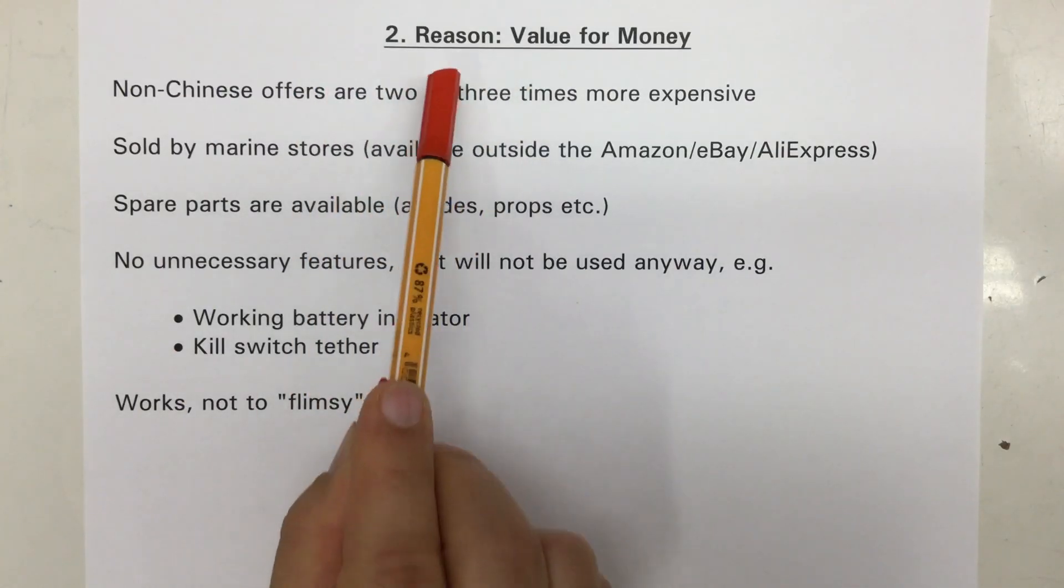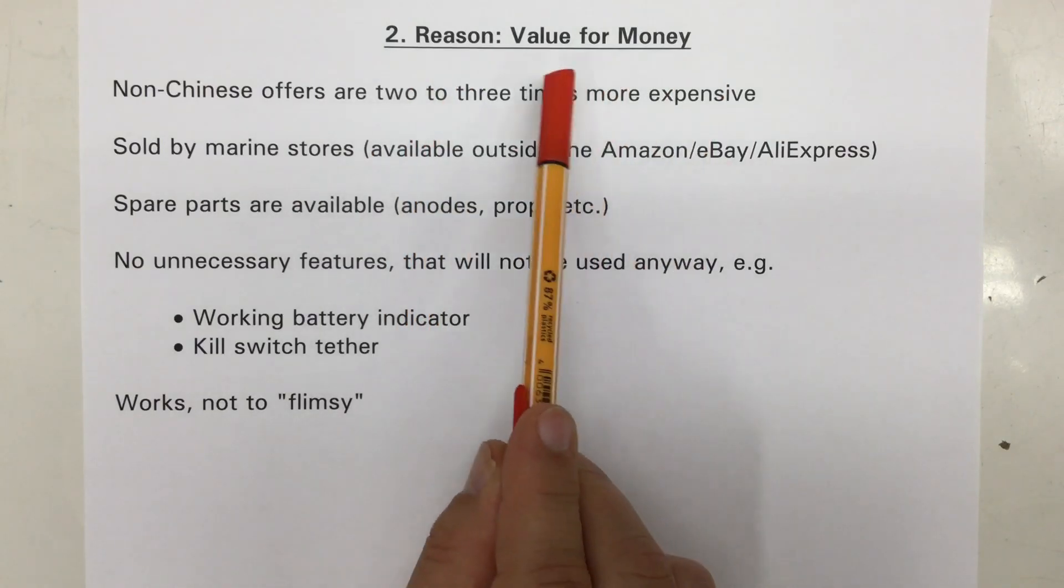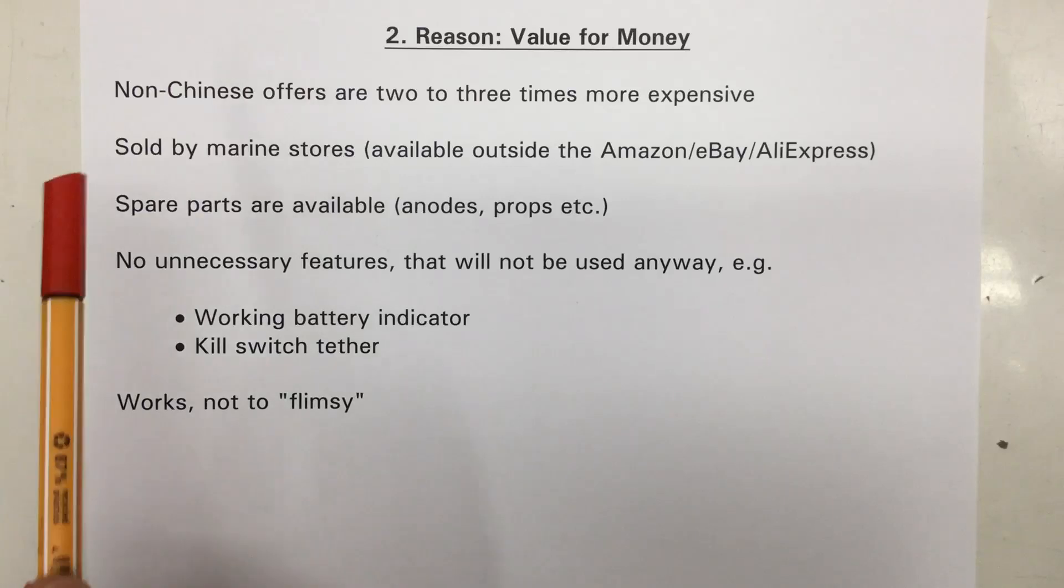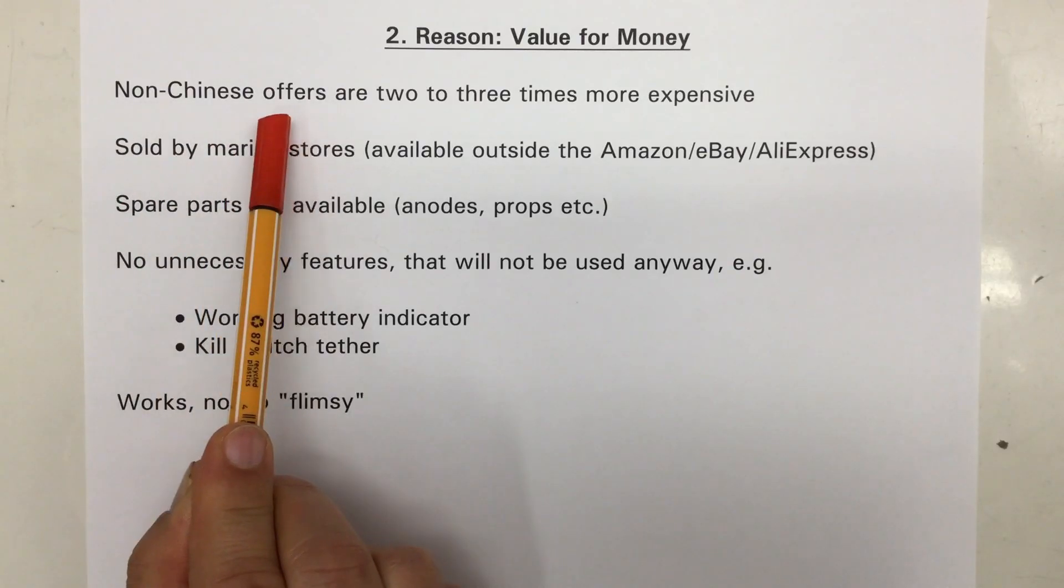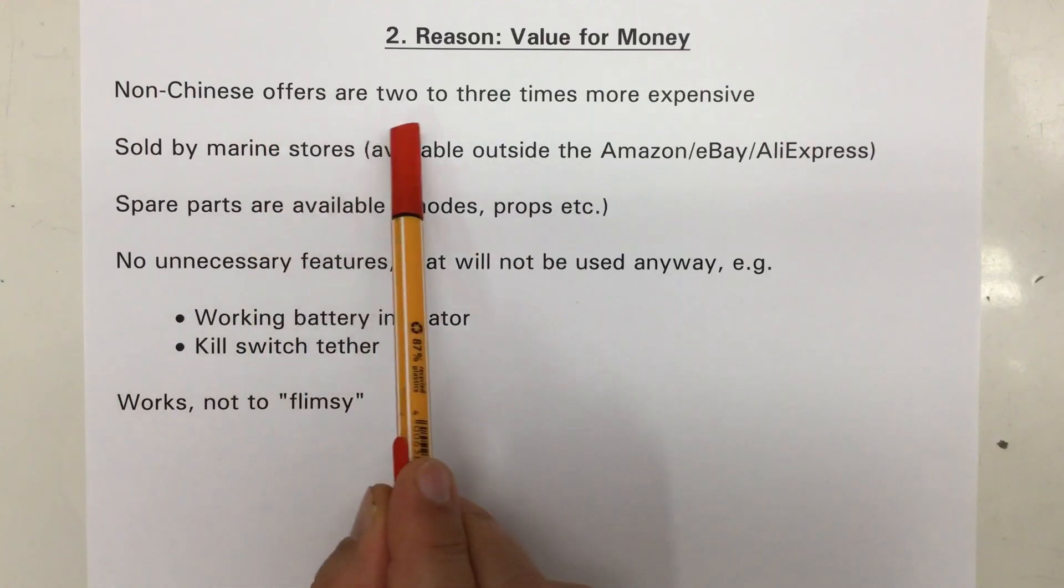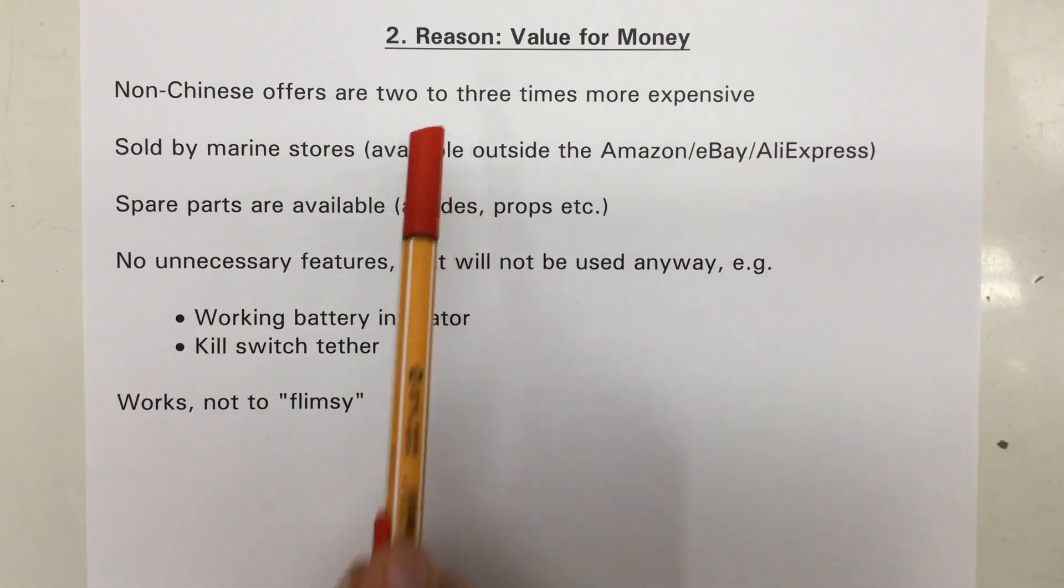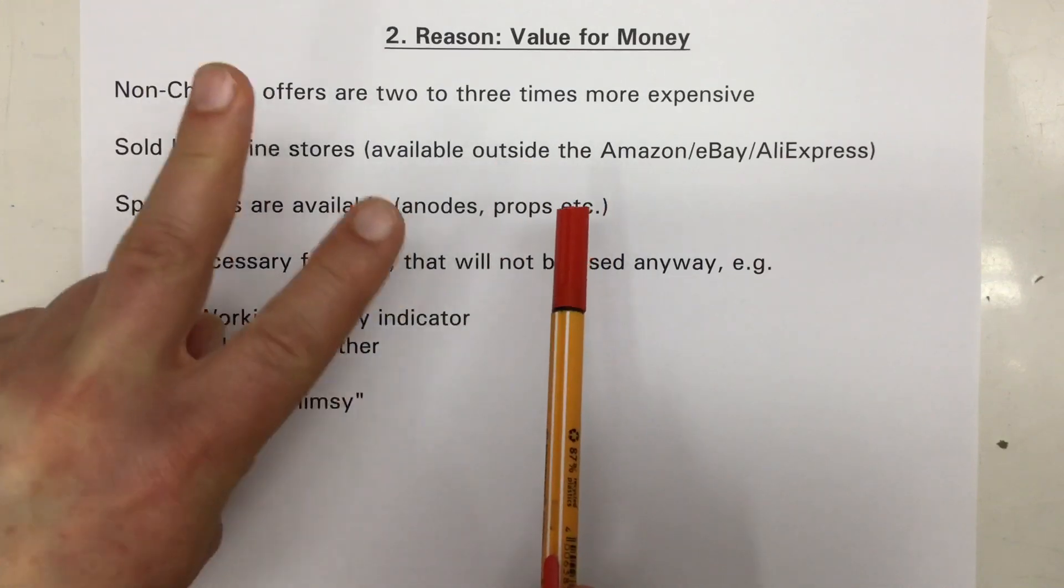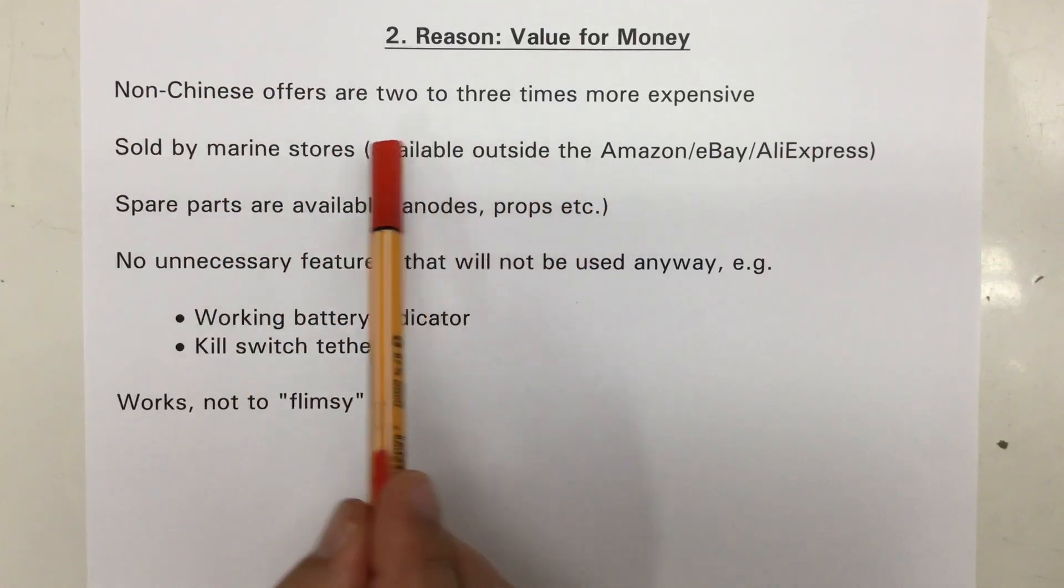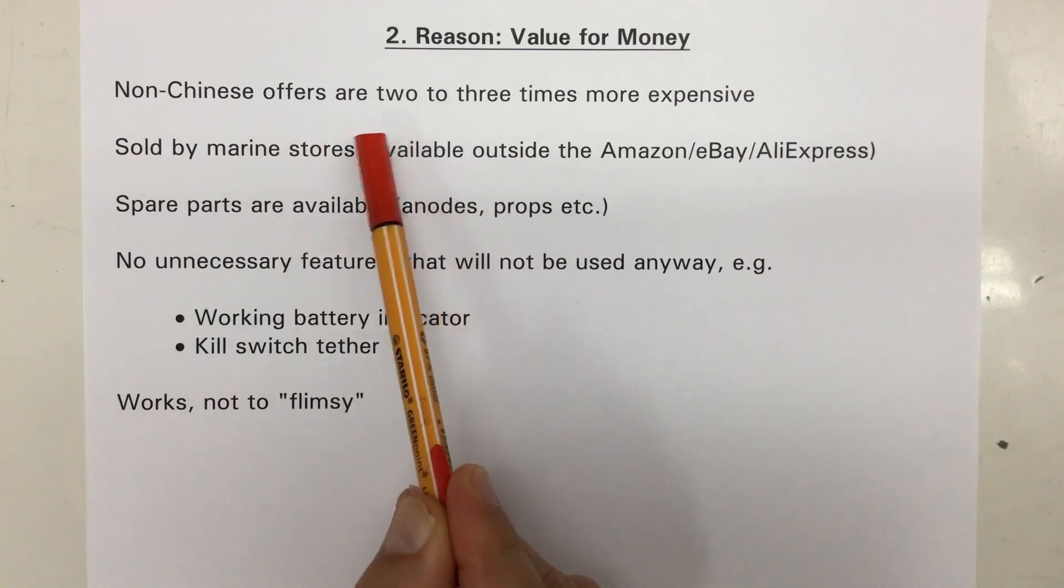Reason two, and that's now of course specific to the Haswing Protoras, is the value you get for your money. The non-Chinese offers, and I'm thinking here about the Torquidos and the E-Propulsions, are two to three times more expensive. And I was not gonna destroy two electric outboards for 1200 bucks each, just because I fancy a bit of soldering.